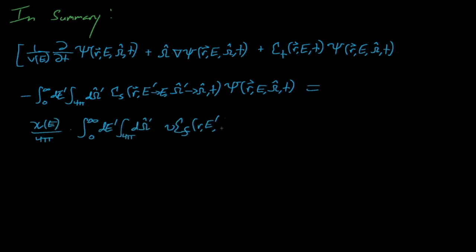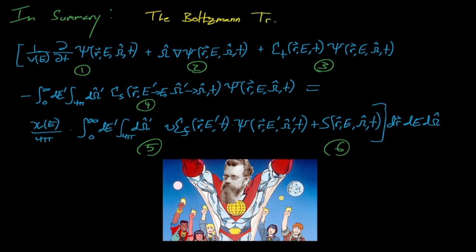So with all six terms combined, we form Captain Planet—I mean the Boltzmann transport equation. We can now track and solve for the distribution of neutrons in some system, and we'll begin discussing exactly how to do this in the following lectures.